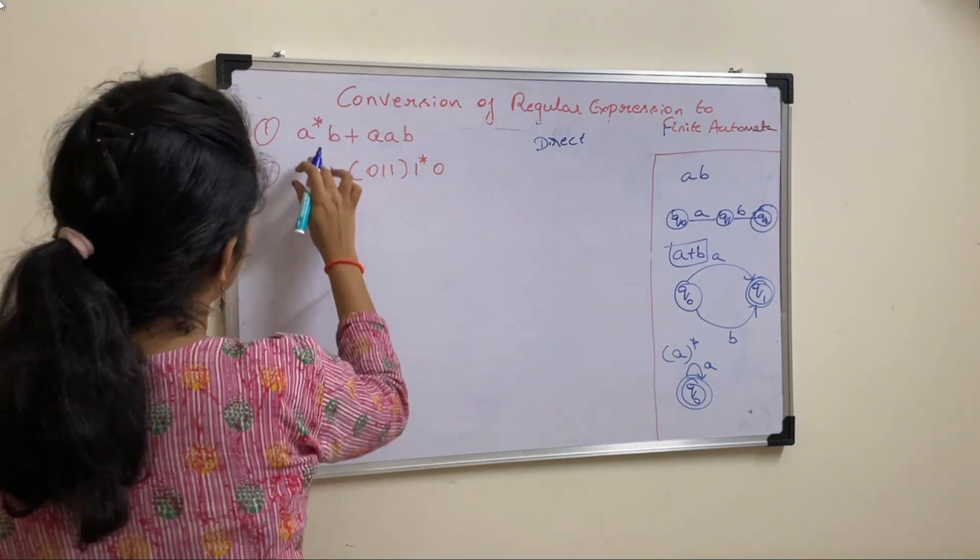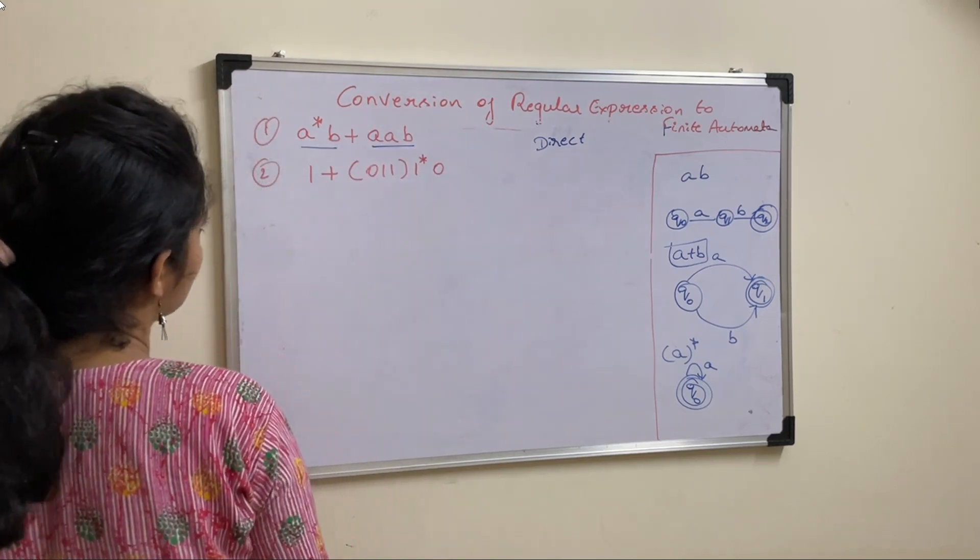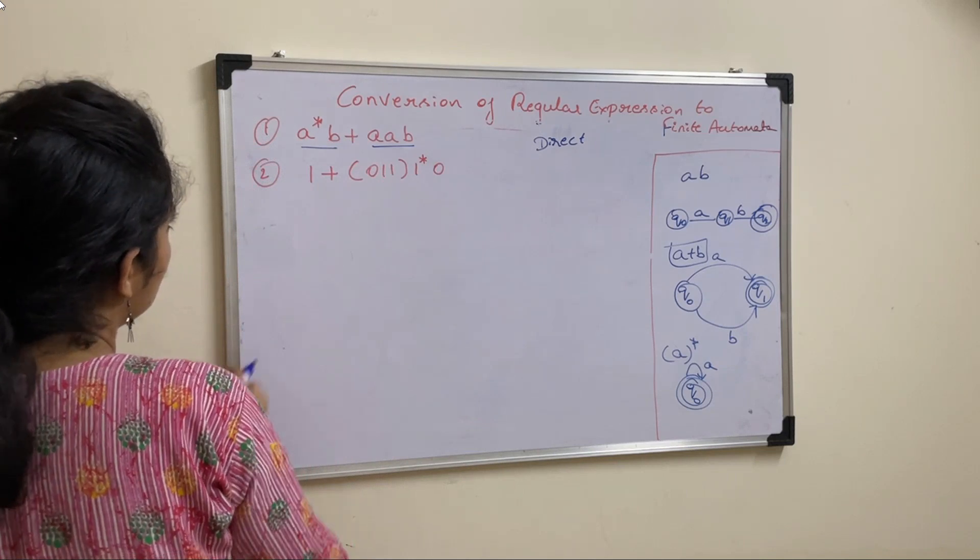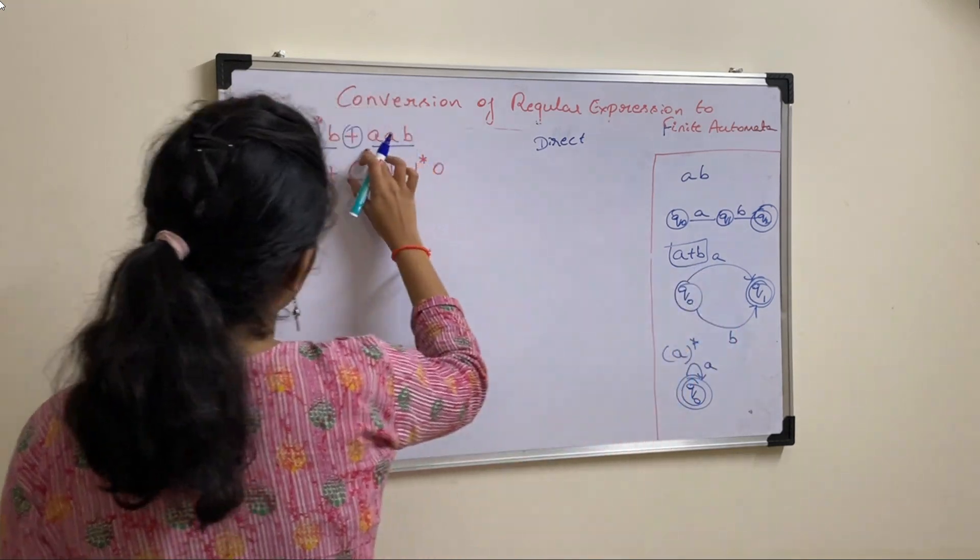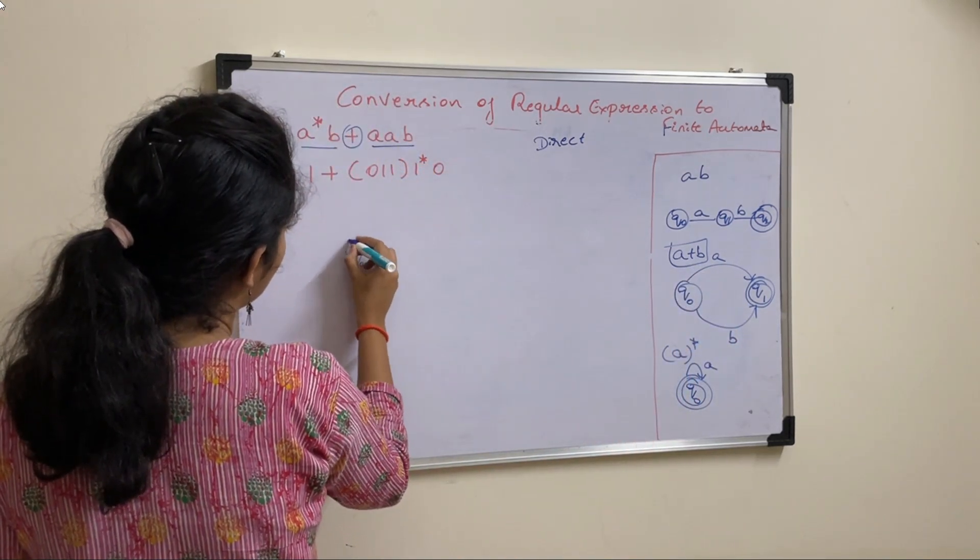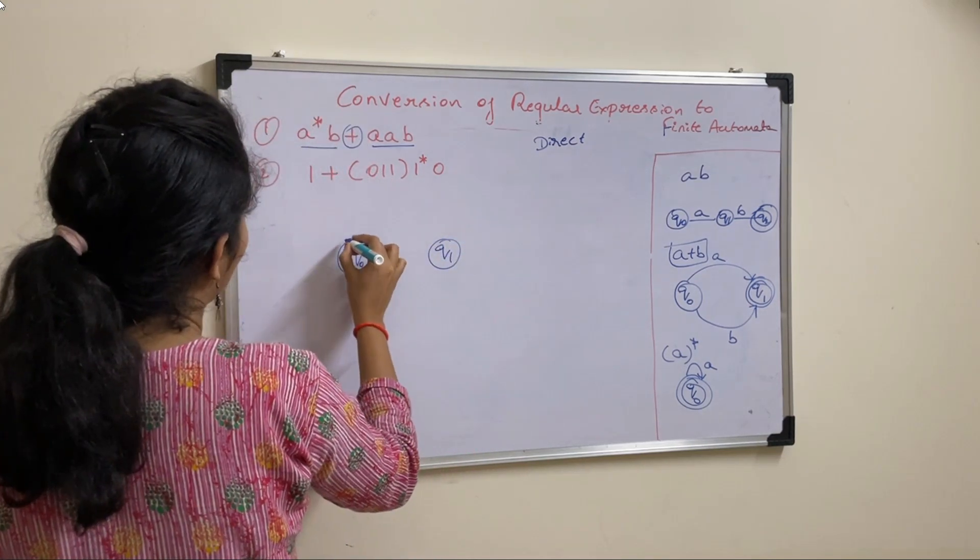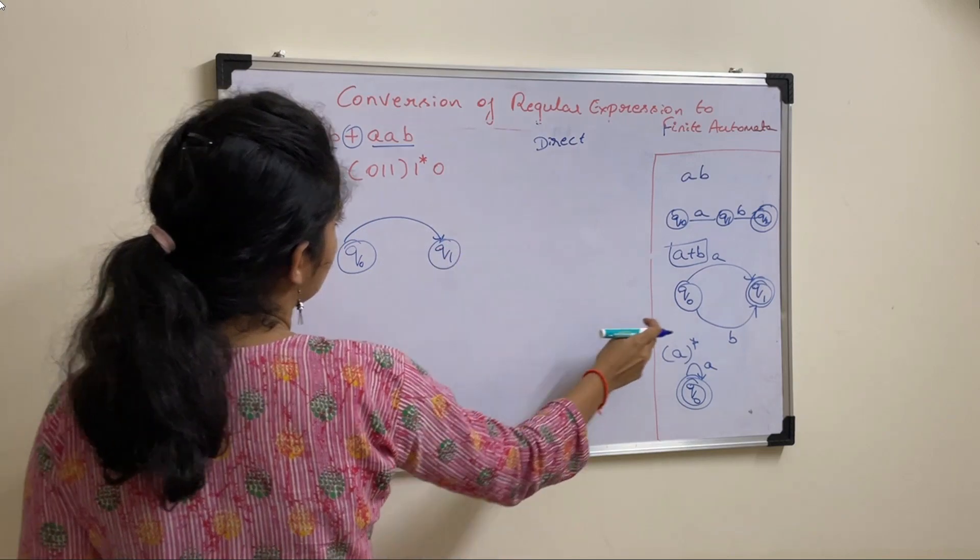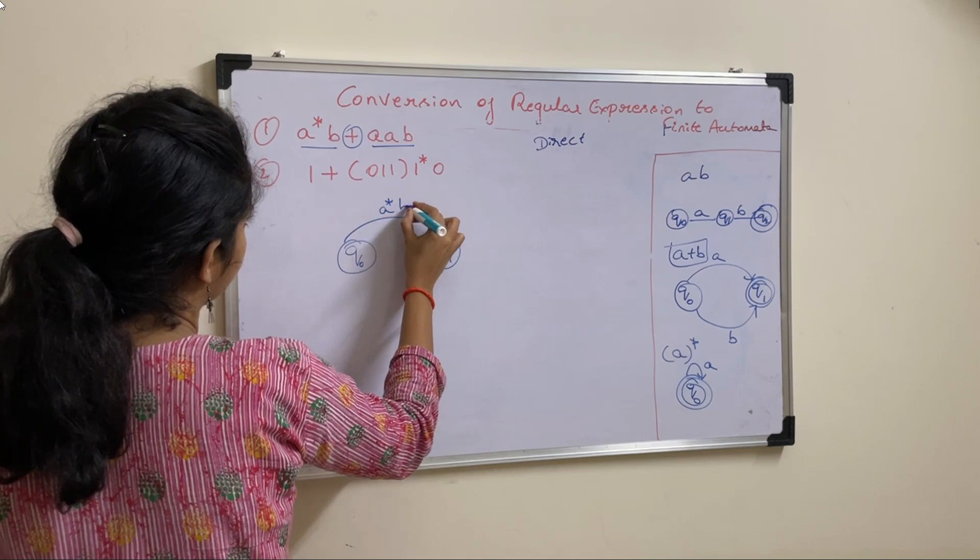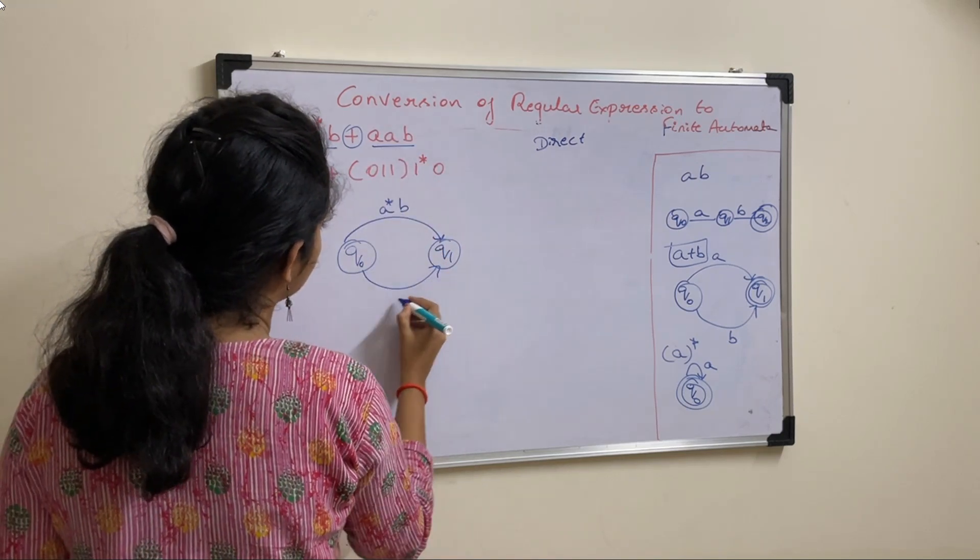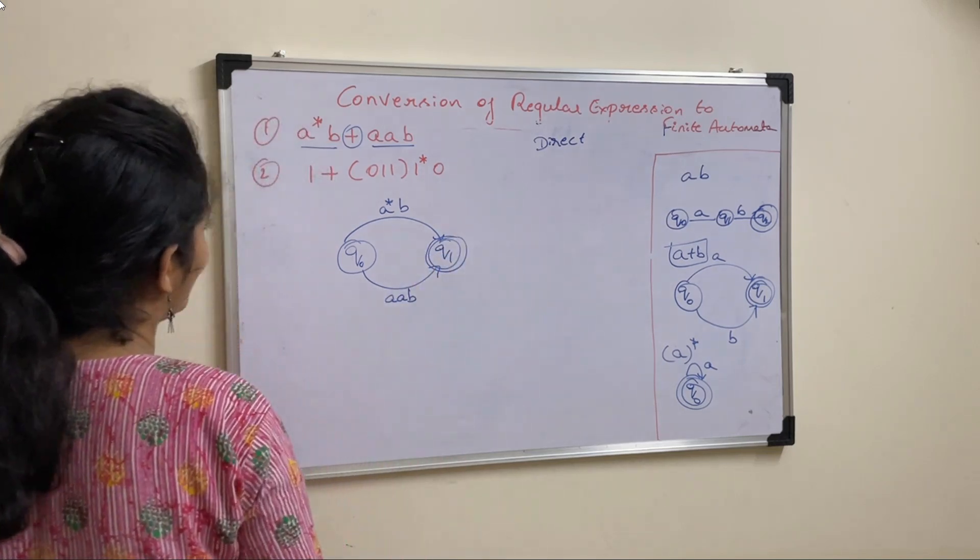Let us solve the first one. Here it is A plus B. Let us divide this into two parts first and apply plus on that. This is the notation for solving this. Take two states Q0, Q1. And now, here A will be this first expression, that is A star B. And B is A and B. This is your final state.